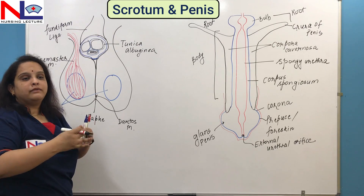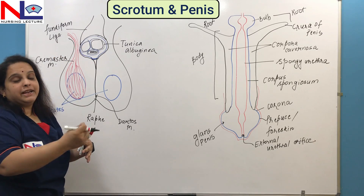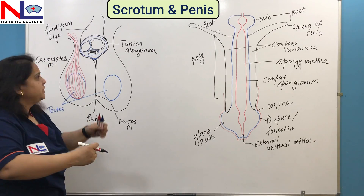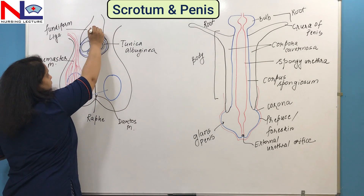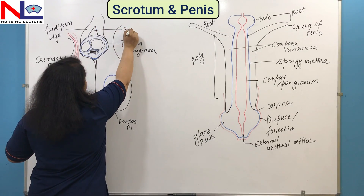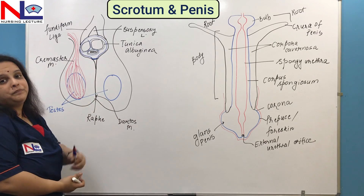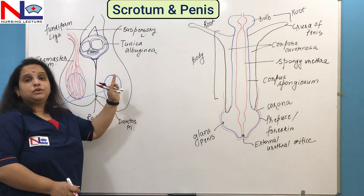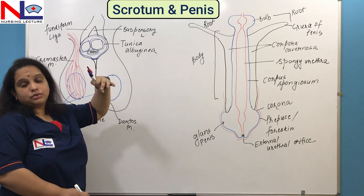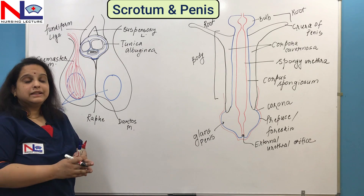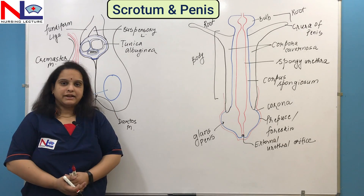In the anterior abdominal wall, various muscles meet medially in the form of a white collagen fiber band called the linea alba. This linea alba extends downward to form the fundiform ligament. The other ligament is the suspensory ligament, which attaches the penis to the symphysis pubis. These two ligaments — the suspensory ligament and the fundiform ligament — support the penis and allow it to hang down. In this lecture, we discussed the supporting structures of the male reproductive system: the scrotum and the penis. Thank you.